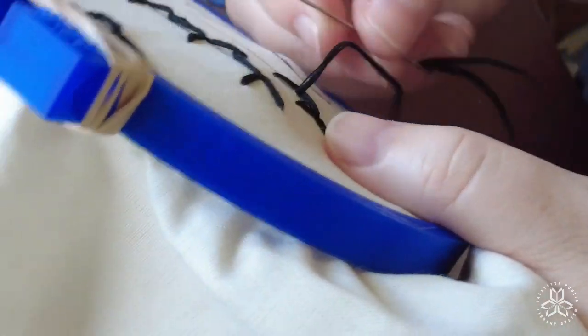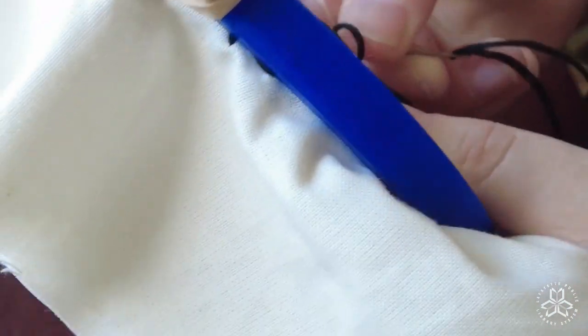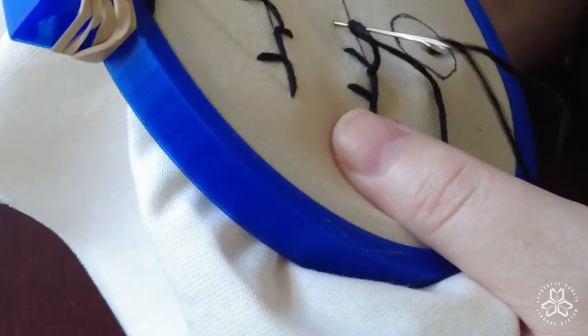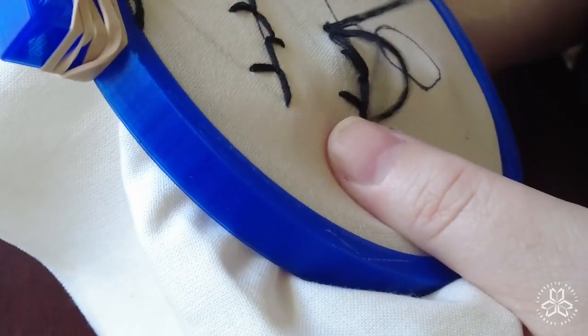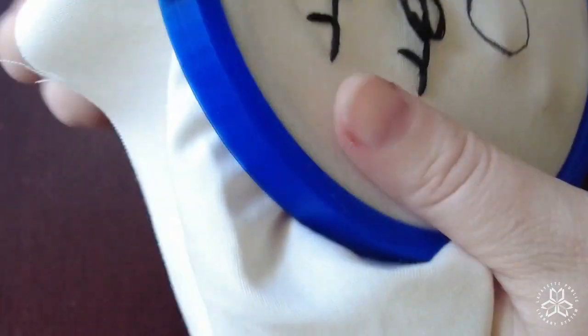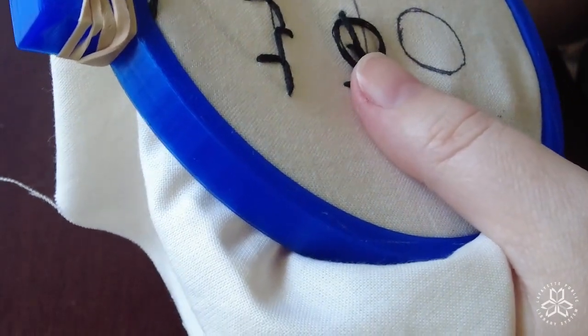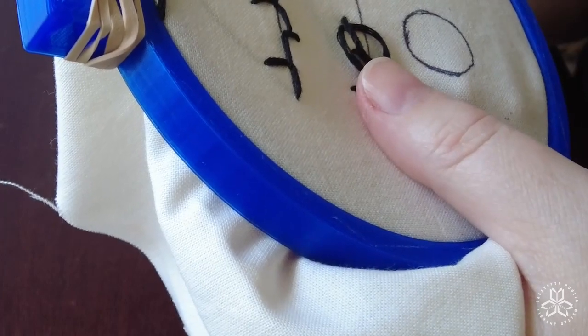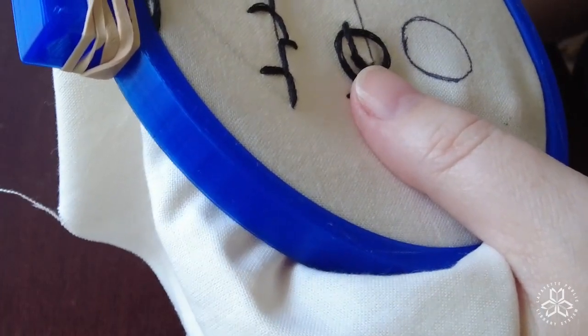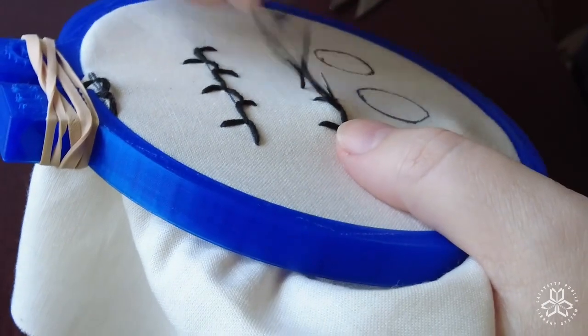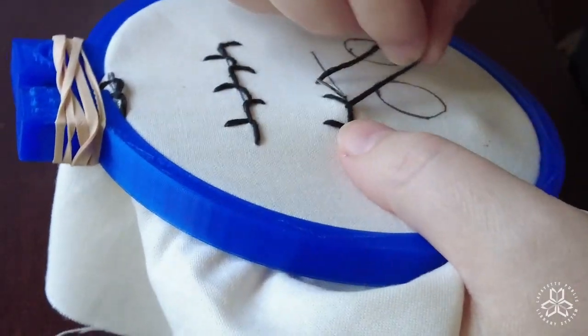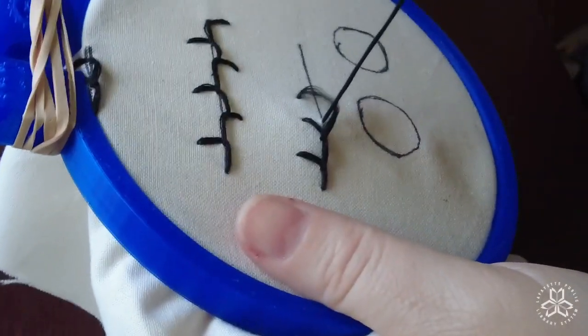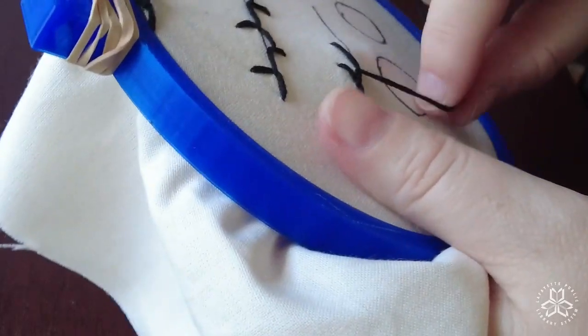So now I'm going to try for a third one and I'm going to try and get it a little bit more slanted. I've gone to the back, created my loop, and then I'm going to come in really close to that previous stitch along the line. And I'm going to show you what that looks like.